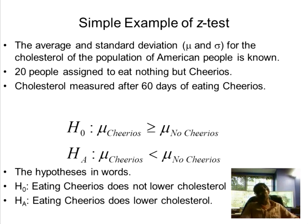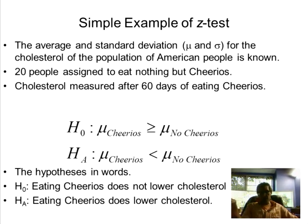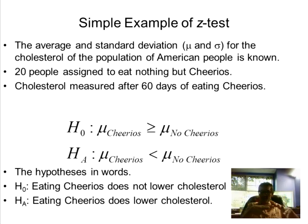Imagine we wanted to do a test of Cheerios' claims. We might know the mu and sigma of the population for cholesterol levels — the average cholesterol and standard deviation. We take a sample of 20 people, assign them to eat nothing but Cheerios, and measure cholesterol 60 days later. This should be starting to sound like a familiar Z-test.